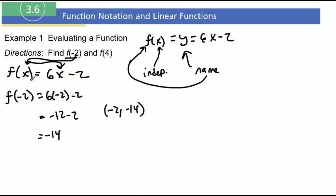And you can also represent coordinate points like this now. You see here, this right here is the x value. This right here is the y value. So this really represents the coordinate point negative 2, negative 14. This is the x value, and this is the y value.